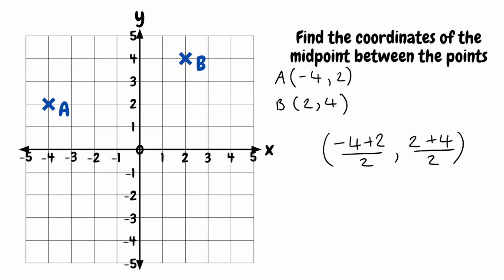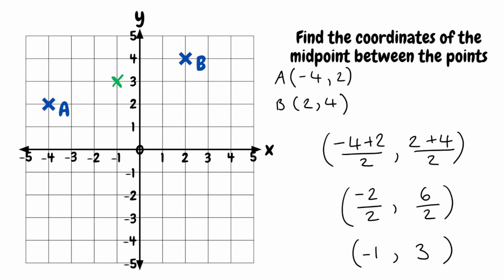Simplifying our numerators, we've got negative 4 plus 2, which gives us negative 2. And then we've got 2 plus 4, which gives us 6. For our final step, we need to do negative 2 divided by 2, which is negative 1. And then 6 divided by 2, which gives us 3. So our midpoint between the points of A and B would sit at coordinates negative 1, 3.